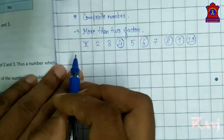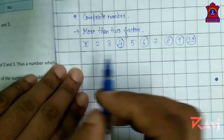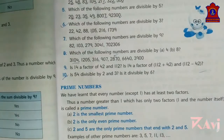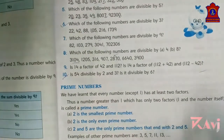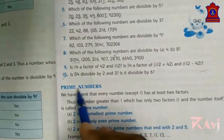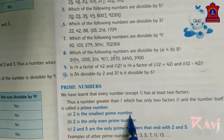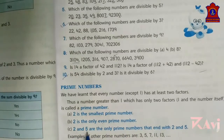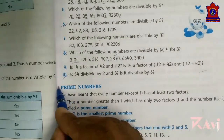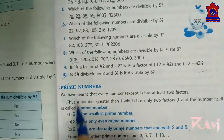Now for some key facts about prime numbers: 2 is the smallest prime number. 2 is the only even prime number. 2 and 5 are the only prime numbers that end with 2 and 5.